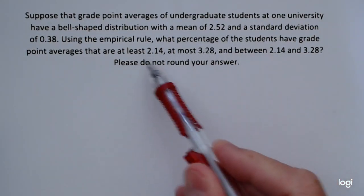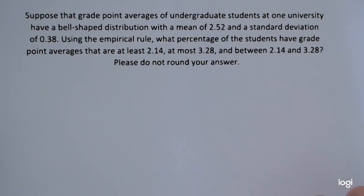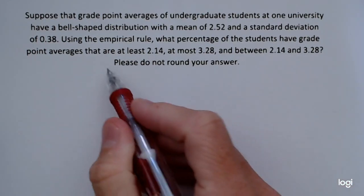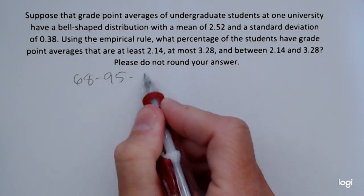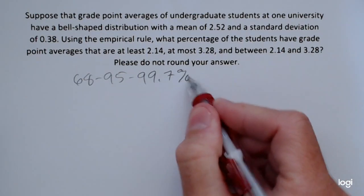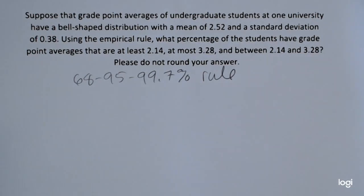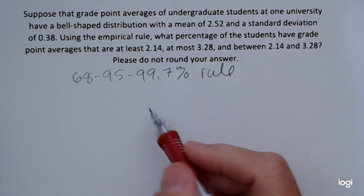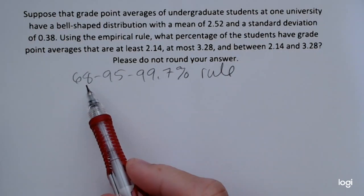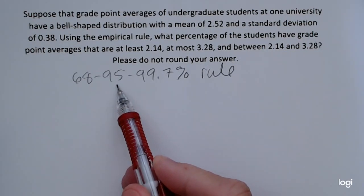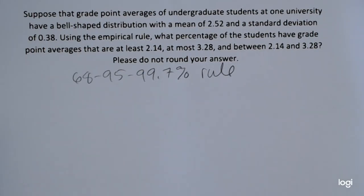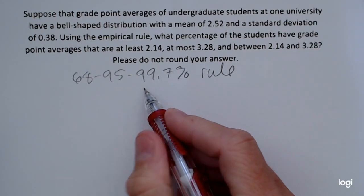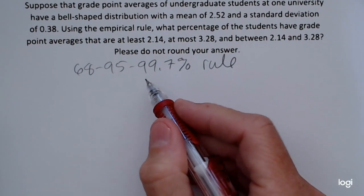Before I get to answering the question, I want to go ahead and sketch what's given. The empirical rule is also called the 68-95-99.7% rule. This means that 68% of the data falls within one standard deviation of the mean, 95% falls within two standard deviations, and 99.7% falls within three standard deviations of the mean. The empirical rule is for bell-shaped data only.